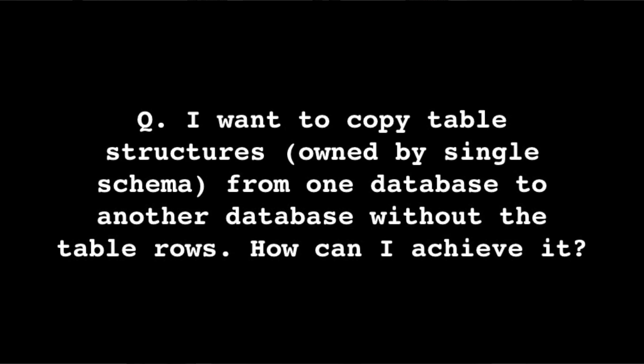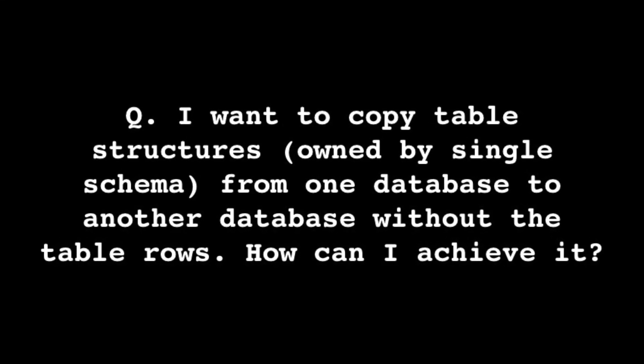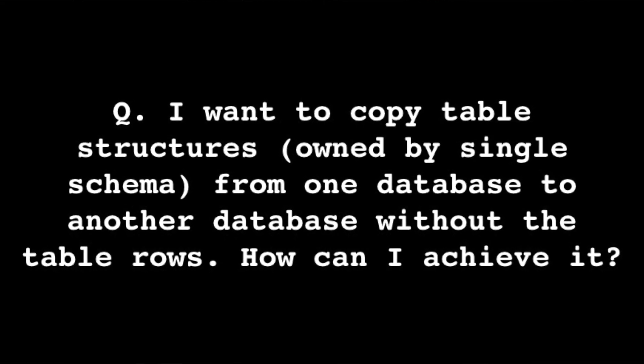Question one: I want to copy table structures owned by a single schema from one database to another database without the table rows — how can I achieve it? This is very simple. You can achieve it using the export/import utility — it's an old utility but still valid across all database versions. You can use it with a query that filters out all records, leaving you with just the table structures. The second tool is Data Pump, which also lets you export table structures from source to target without the records.